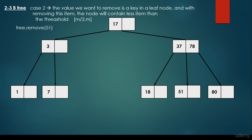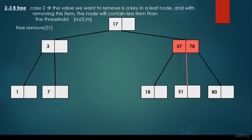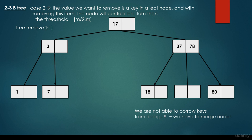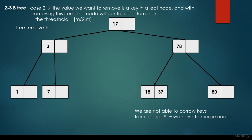What about the case when we would like to remove 51? Here we are not able to borrow from the left or the right sibling. We search for 51 and find that it is between 37 and 78, so we go down that branch and locate the item. Since we cannot borrow keys from siblings, we have to merge nodes — we merge the left sibling with the parent, combining 18 with 37, and remove the now-empty node. The result is a valid B3: all leaf nodes are on the same level, all B-tree properties are met, the left subtree is smaller and the right subtree is greater than the given key.